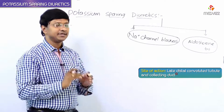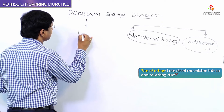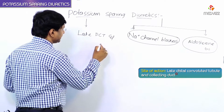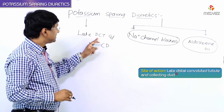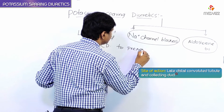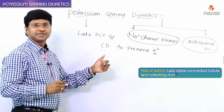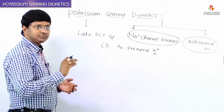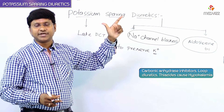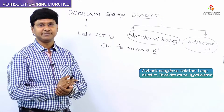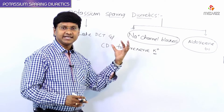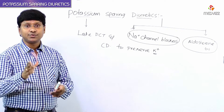If you take the site of action of the potassium-sparing diuretics, remember they act in the late distal convoluted tubule and they act in the collecting duct to preserve potassium. The remaining diuretics — carbonic anhydrase inhibitors, loop diuretics, thiazide diuretics — they cause potassium loss and will cause hypokalemia, whereas potassium-sparing diuretics will preserve potassium.